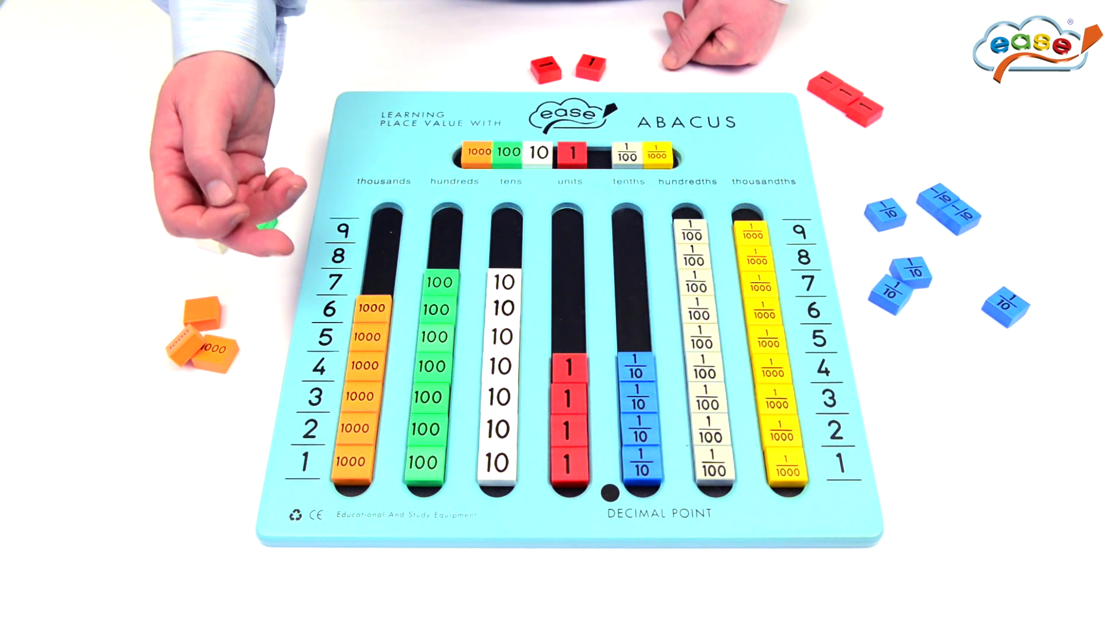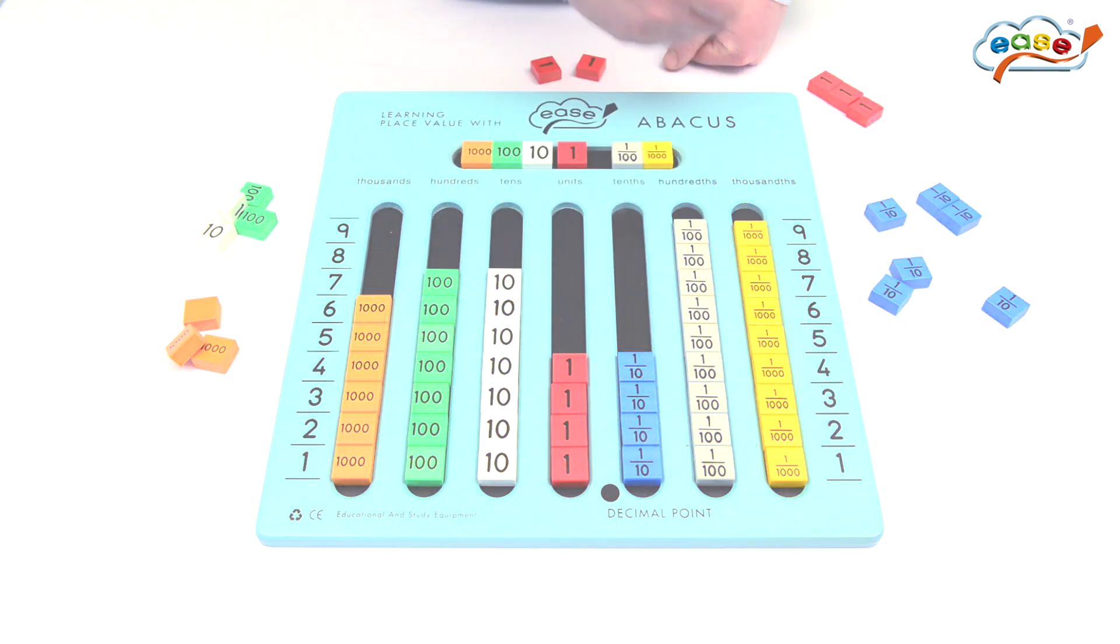And now a new sum is six thousand seven hundred and seventy four point four nine nine.